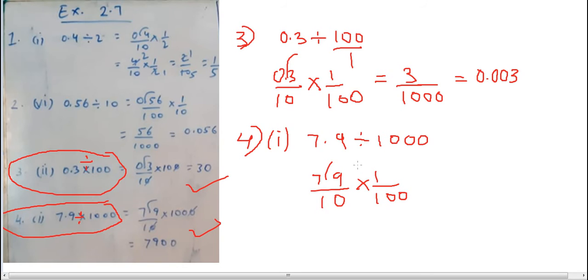Divide to multiplication change. Clear? Now 79 times 1 is 79, by 10 times 1000, which is 10,000. Four zeros, that means 0.0079.